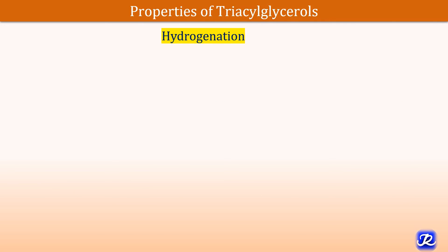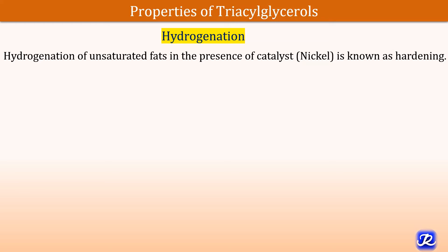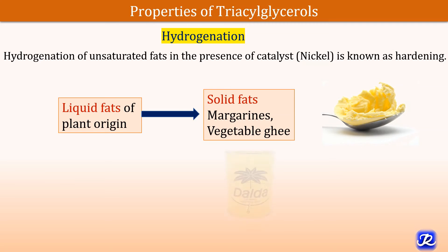Hydrogenation is another property of triacylglycerol. Hydrogenation of unsaturated fats in the presence of a catalyst is known as hardening. Liquid fats of plant origin are converted into solid fats by hydrogenation — for example, margarines and vegetable ghee.